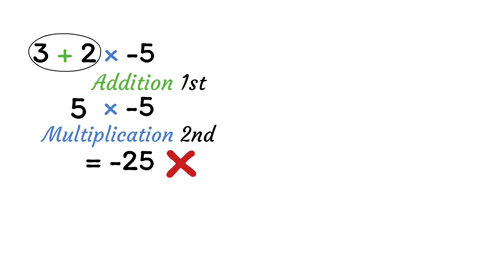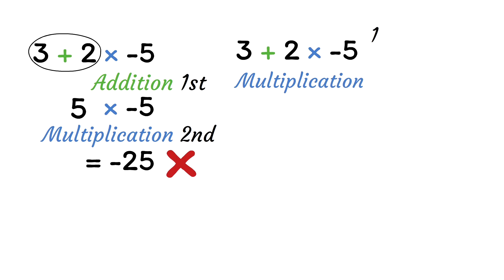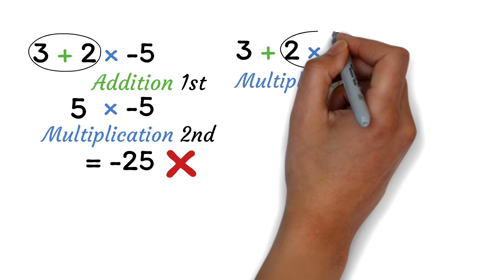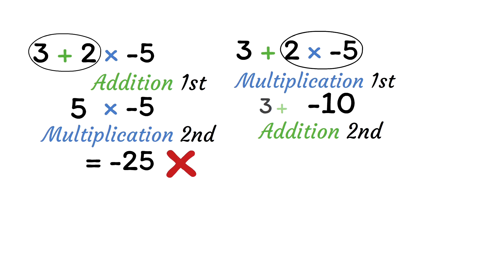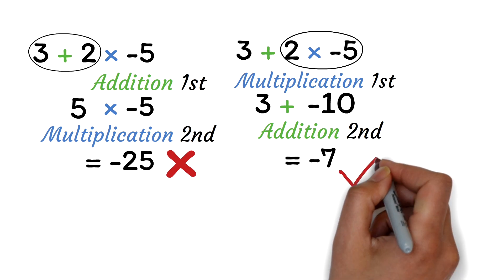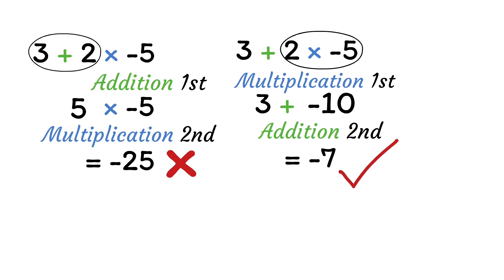So let's find out what would happen if we had performed the multiplication operation first. We'll multiply the 2 and the negative 5 first. This will give us negative 10. Then we will perform the addition operation second. So 3 plus negative 10 is negative 7. The correct answer is negative 7.